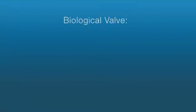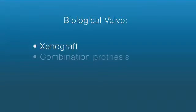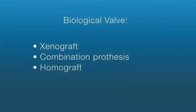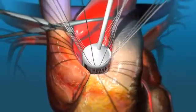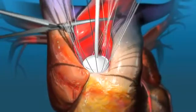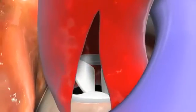Your surgeon may replace the damaged valve with a mechanical valve or a biological valve. The biological valve may be a xenograft, which is made completely from animal tissue, or a combination prosthesis, which is composed of animal tissue sewn into a synthetic frame, or a homograft, which is a valve donated from a human heart. Your surgeon will then carefully sew the replacement valve into place and close the aorta with stitches.